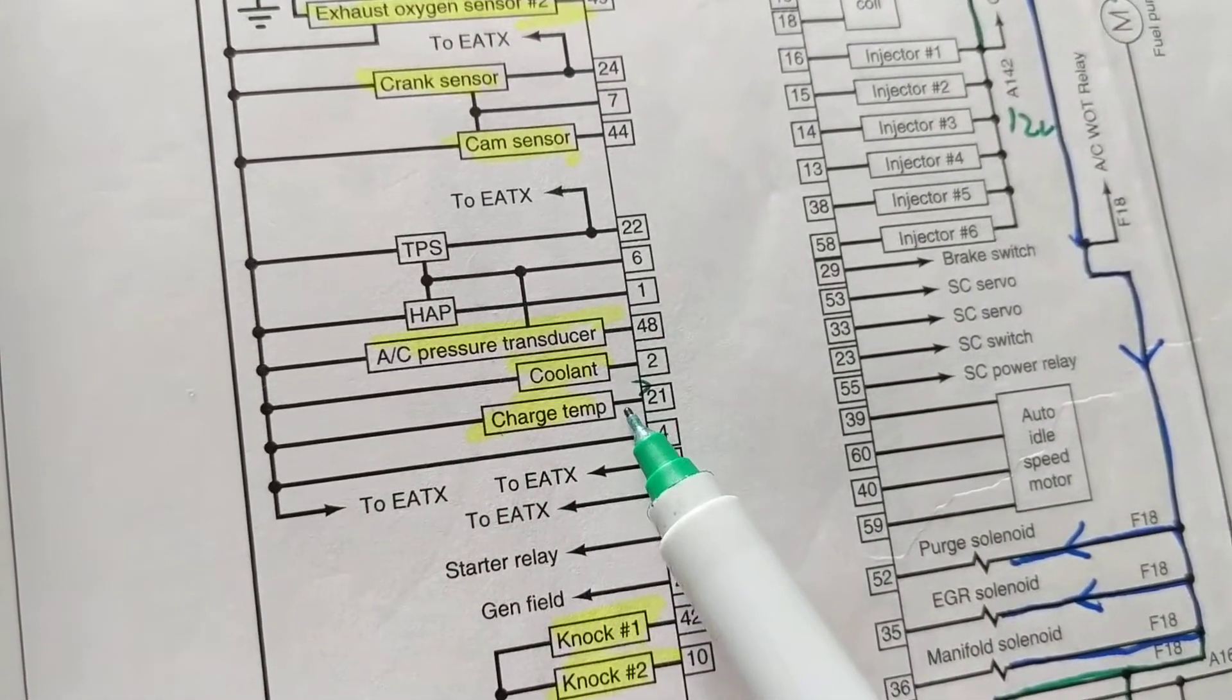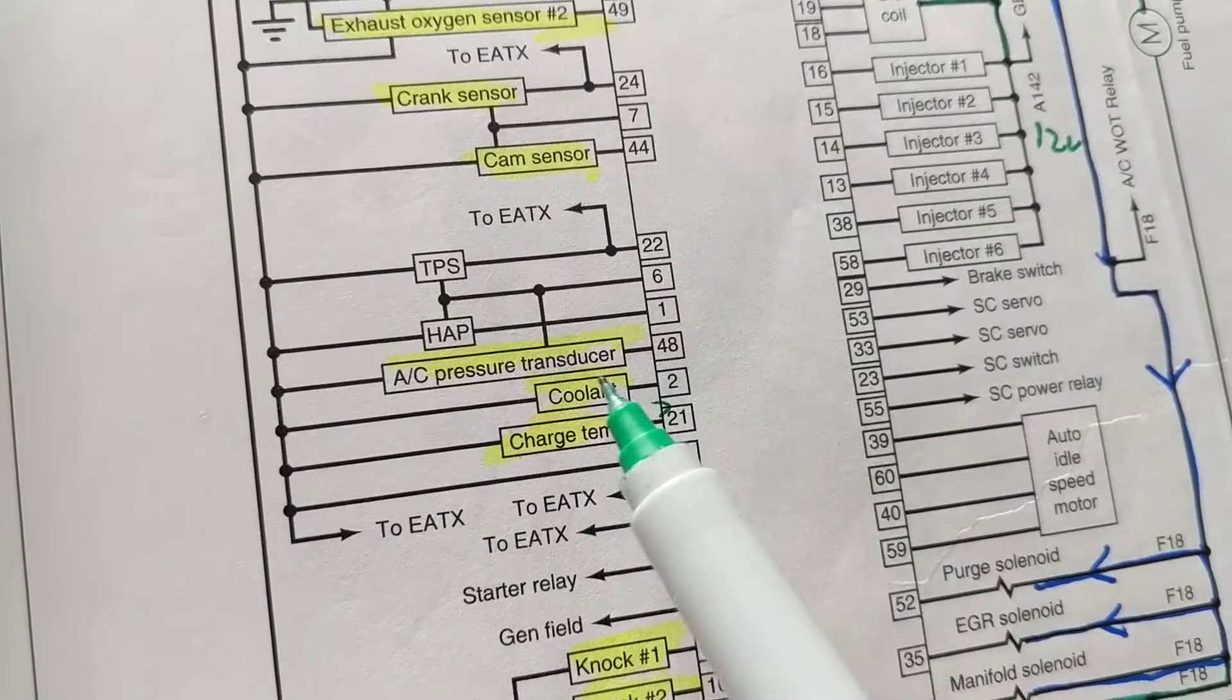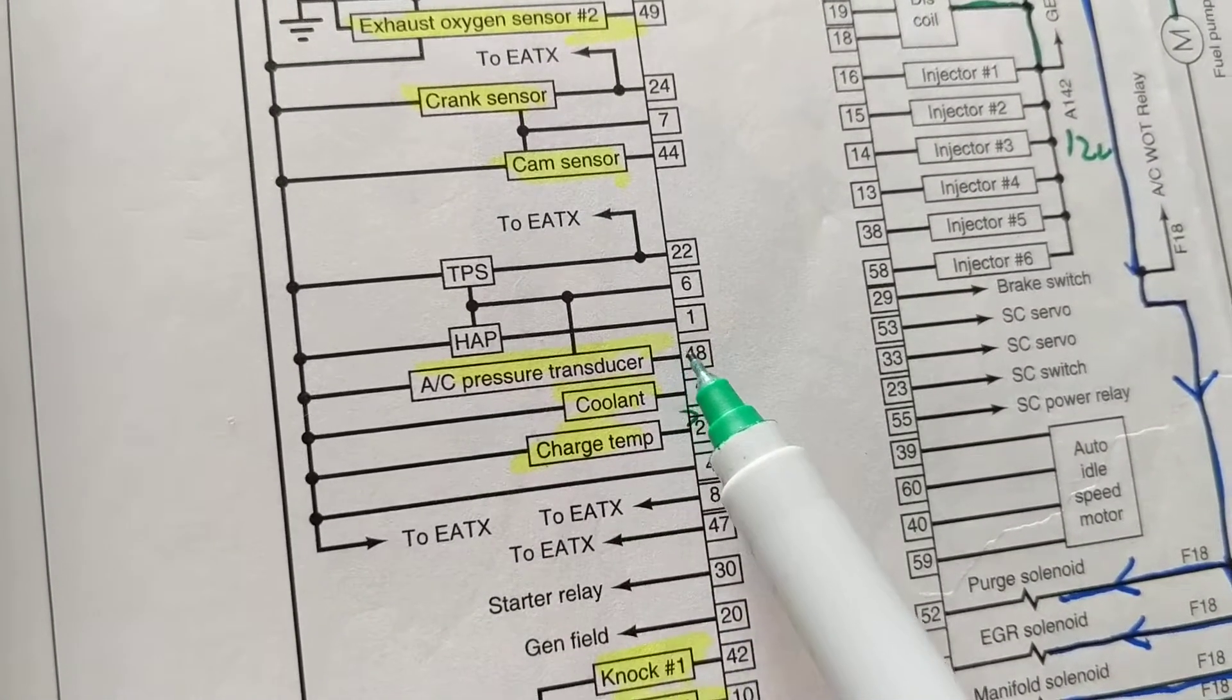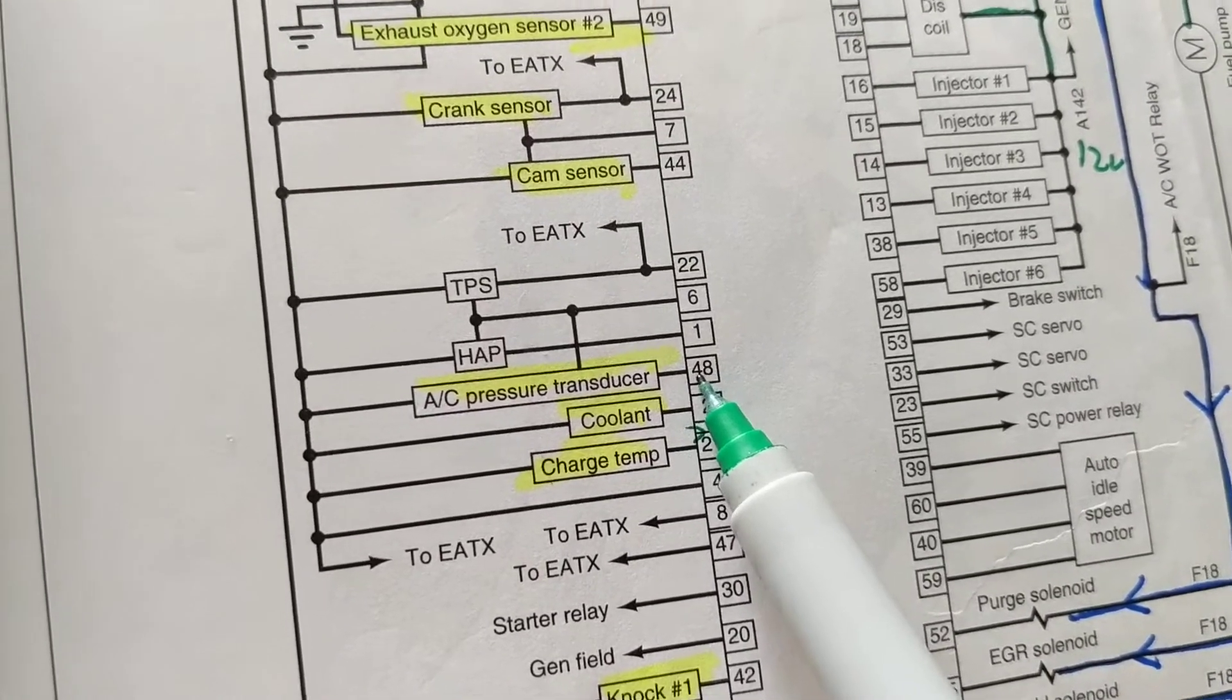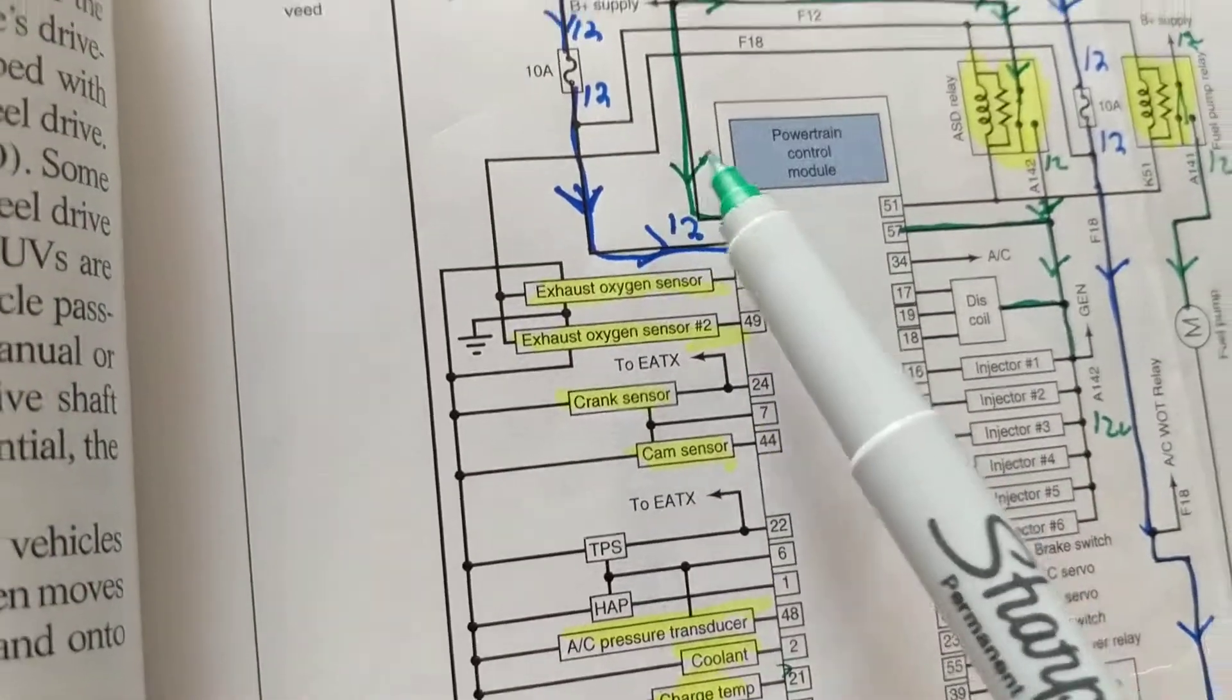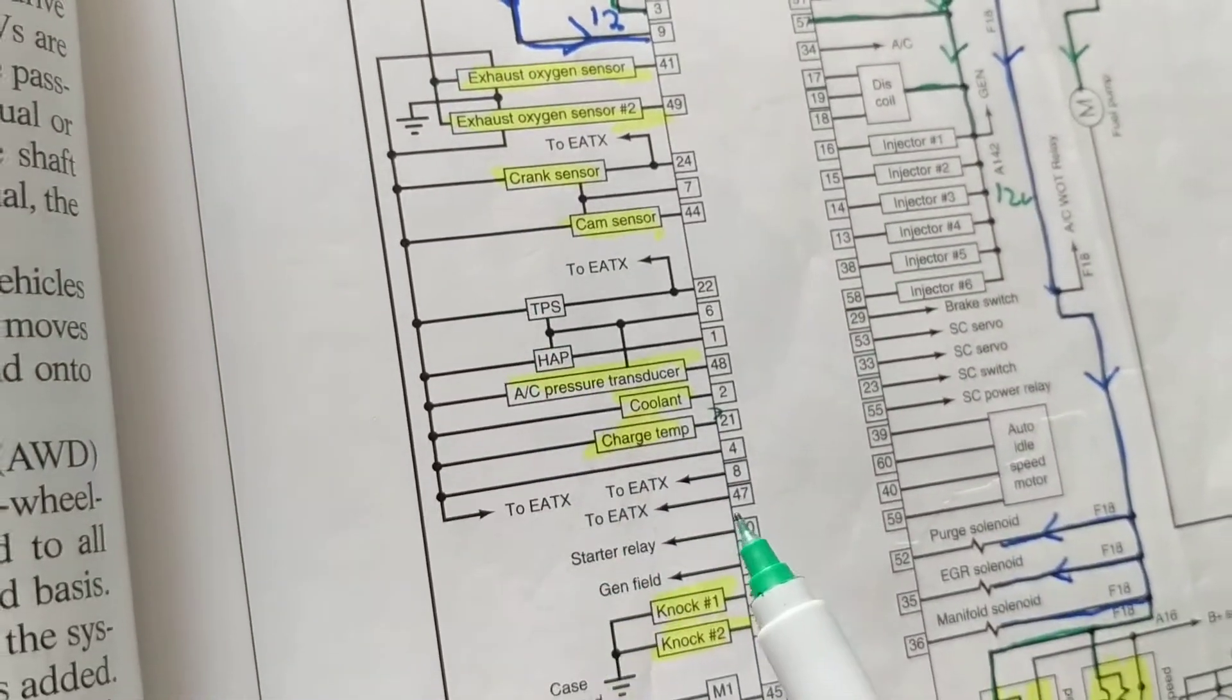So see how the sensors go to pin 21—coolant temperature sensor, pressure for AC pressure, a transducer for pin 48. As you see, TPS for pin 22. So I think this is a good diagram for beginners to understand what's going on.